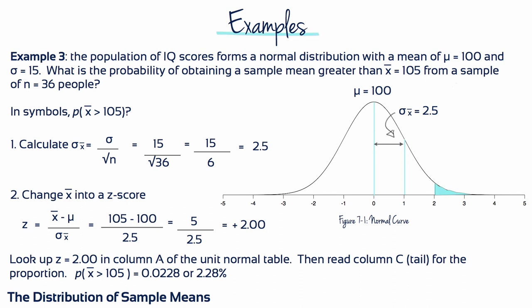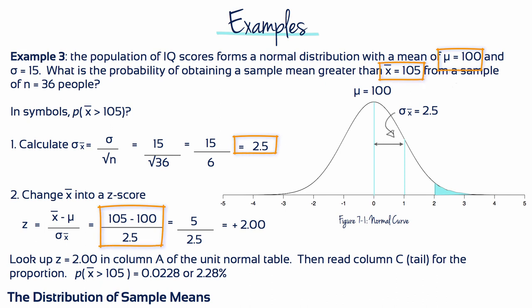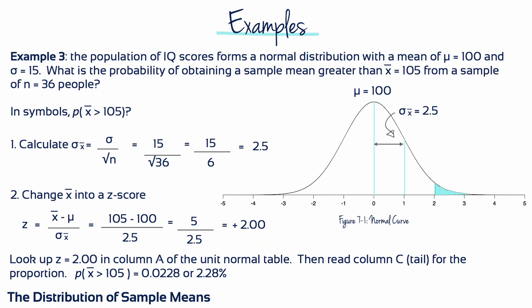Example 3: Again, a population of IQ scores forms a normal distribution with a mean of 100 and a standard deviation of 15. What's the probability of obtaining a sample mean greater than 105 from a sample this time of n equals 36 people? The standard error is 15 divided by the square root of 36, which equals 2.5. Changing to a z-score: 105 minus 100 divided by 2.5 gives us a z-score of plus 2, and looking that up in the unit normal table gives us 0.0228, or 2.28%. Comparing Examples 2 and 3, it should be less probable to have a sample of 36 people with an average IQ greater than 105 than just having a sample of 9 people with an average IQ greater than 105.